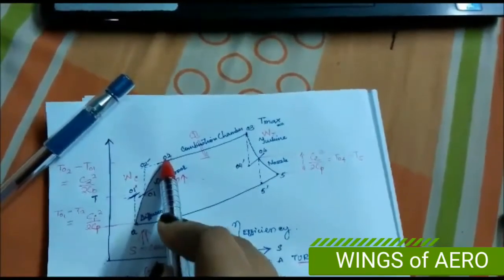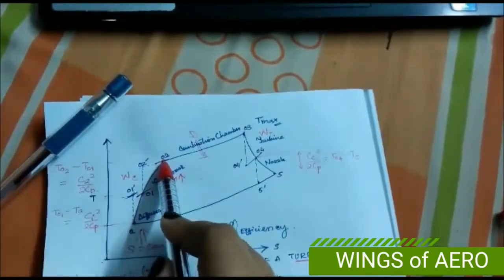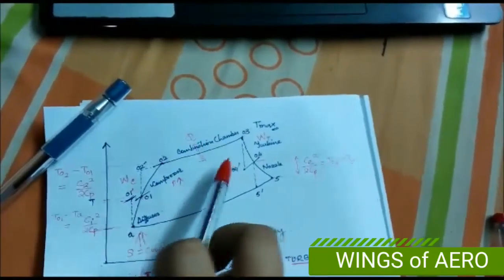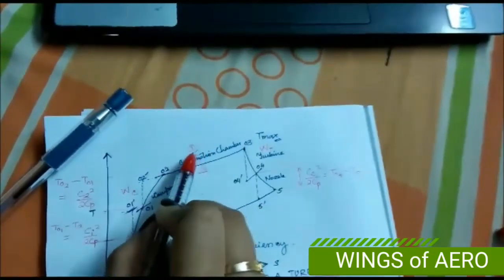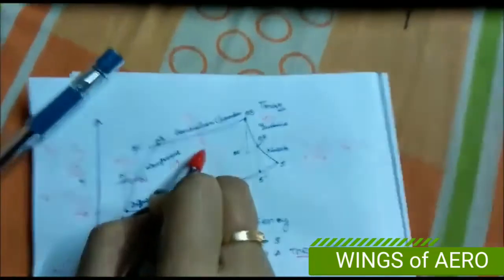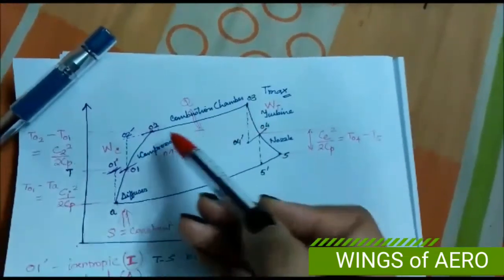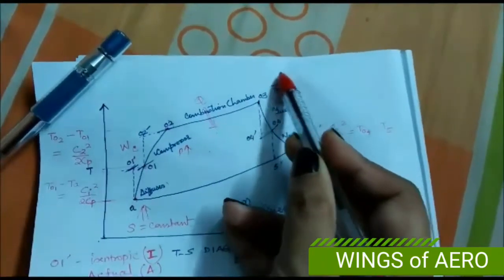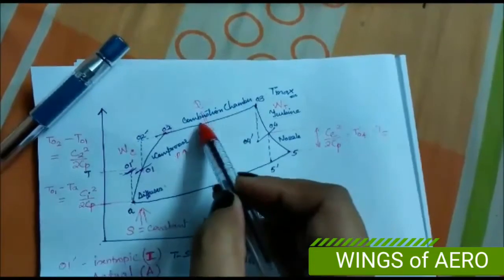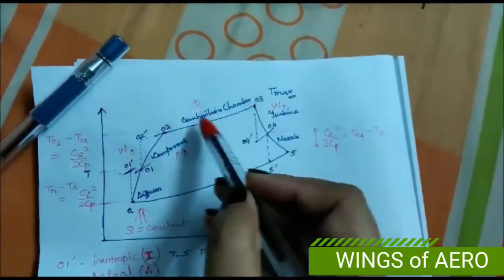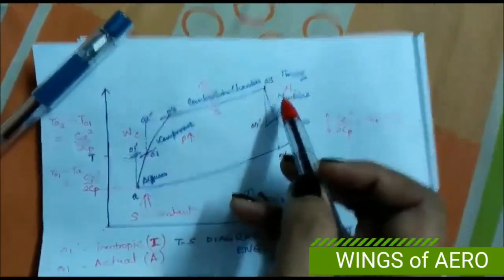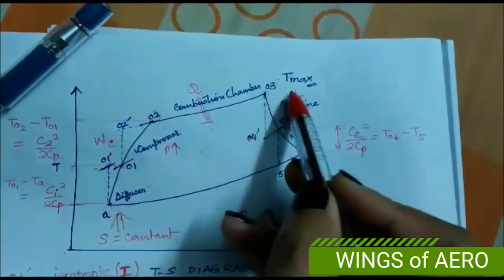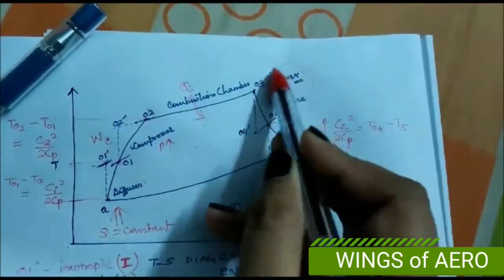Point 0-2 is the entrance of the combustion chamber. Inside the combustion chamber, there is a combination of air and fuel mixture where heat is added into the system. The maximum temperature occurs at the exit of the combustion chamber, which is also the inlet of the turbine. This point is denoted as T-max or T03.